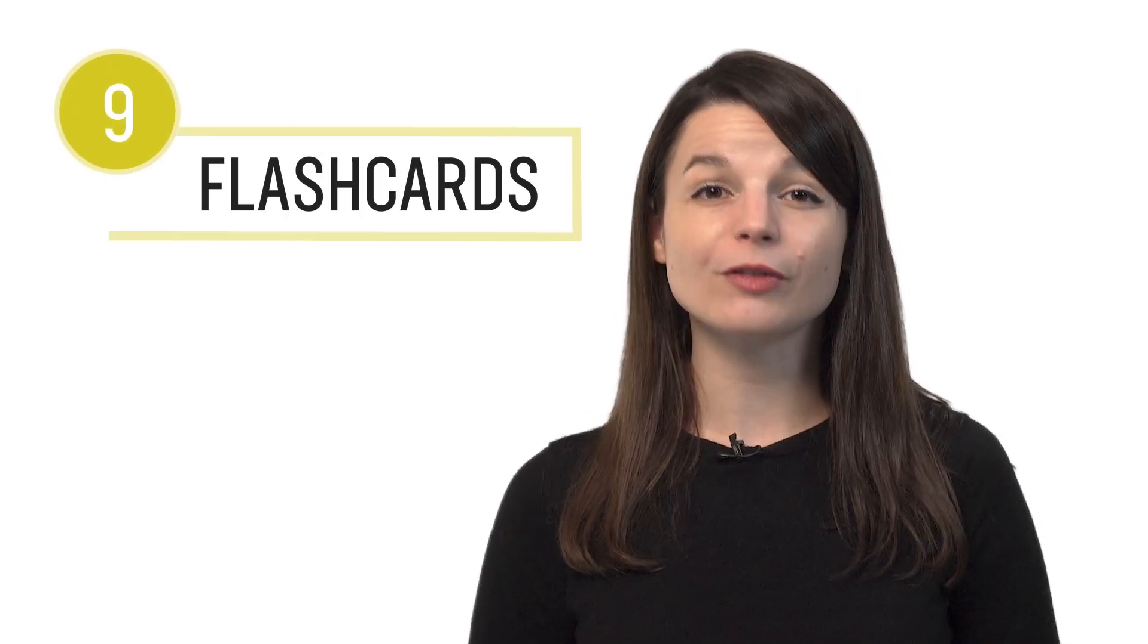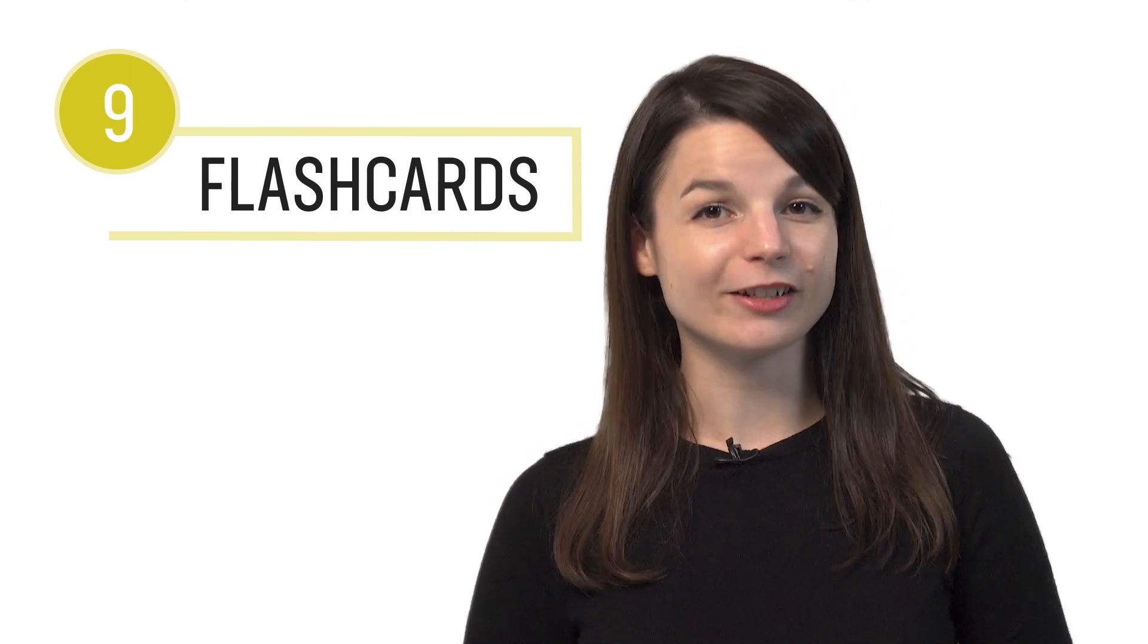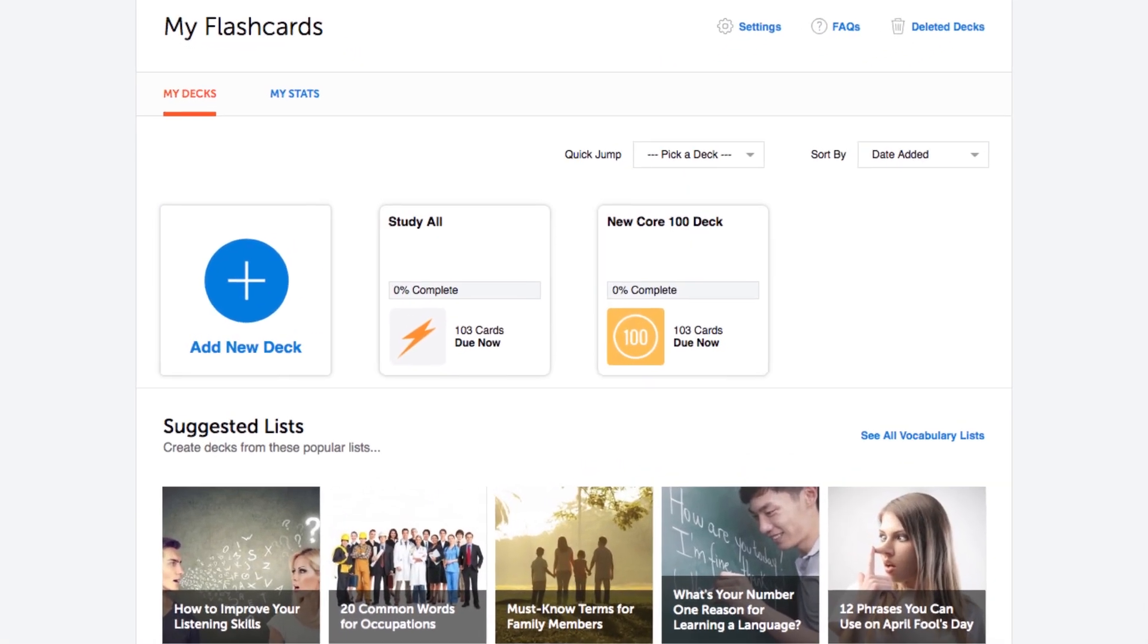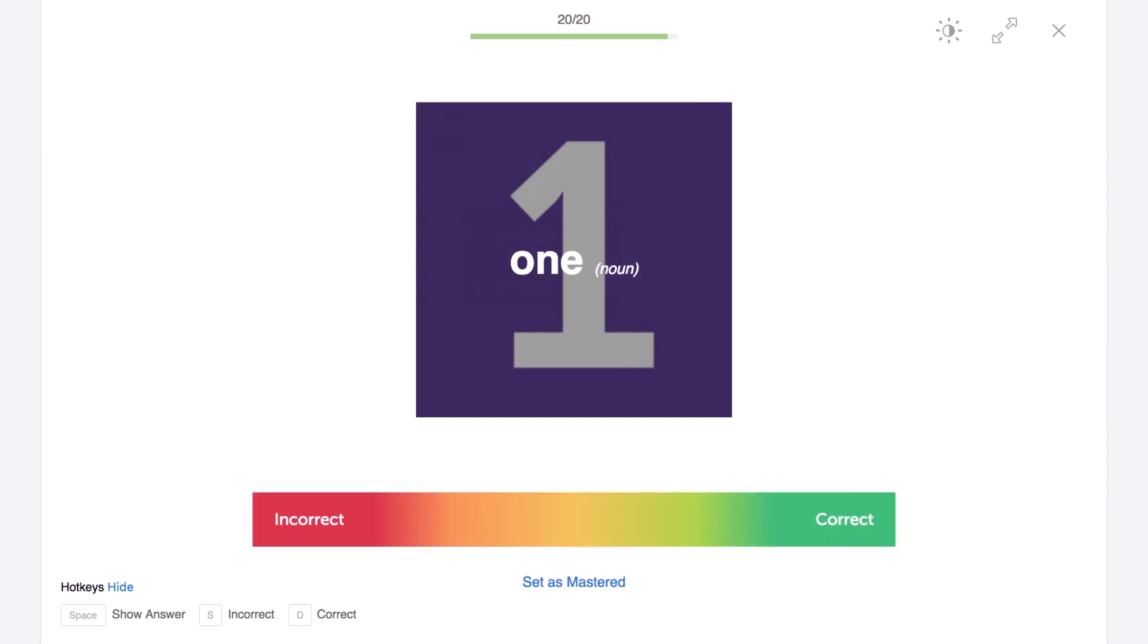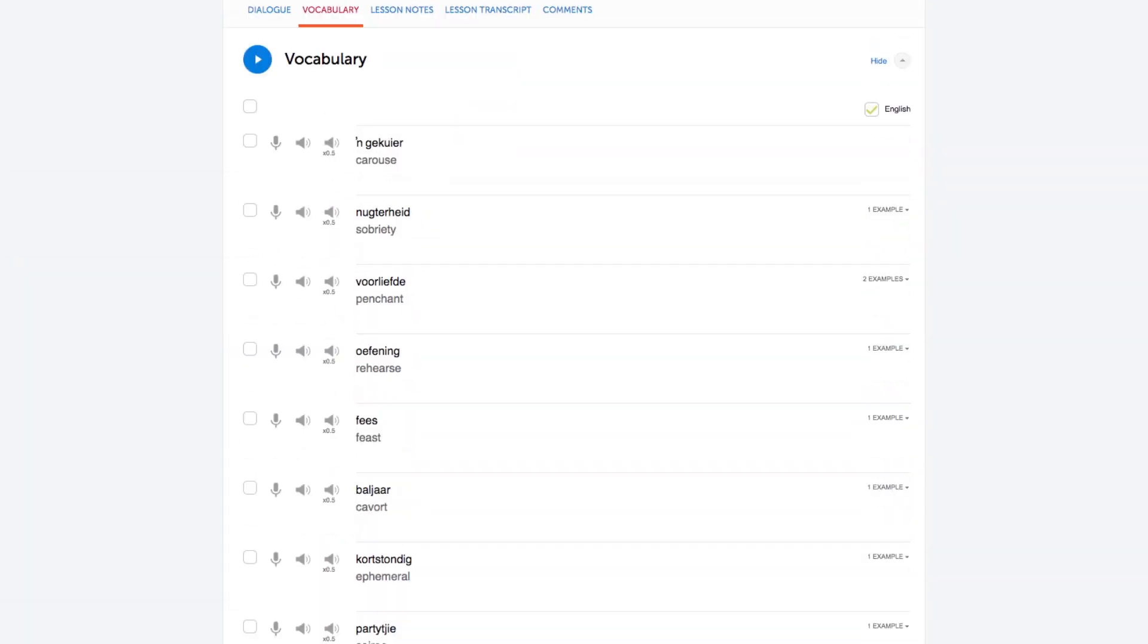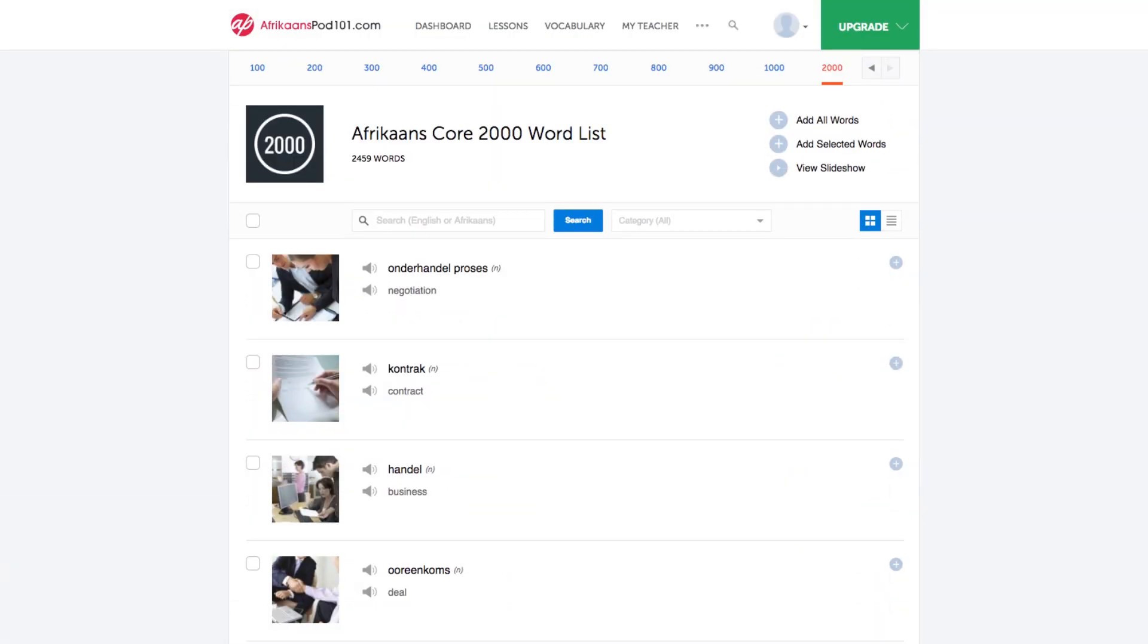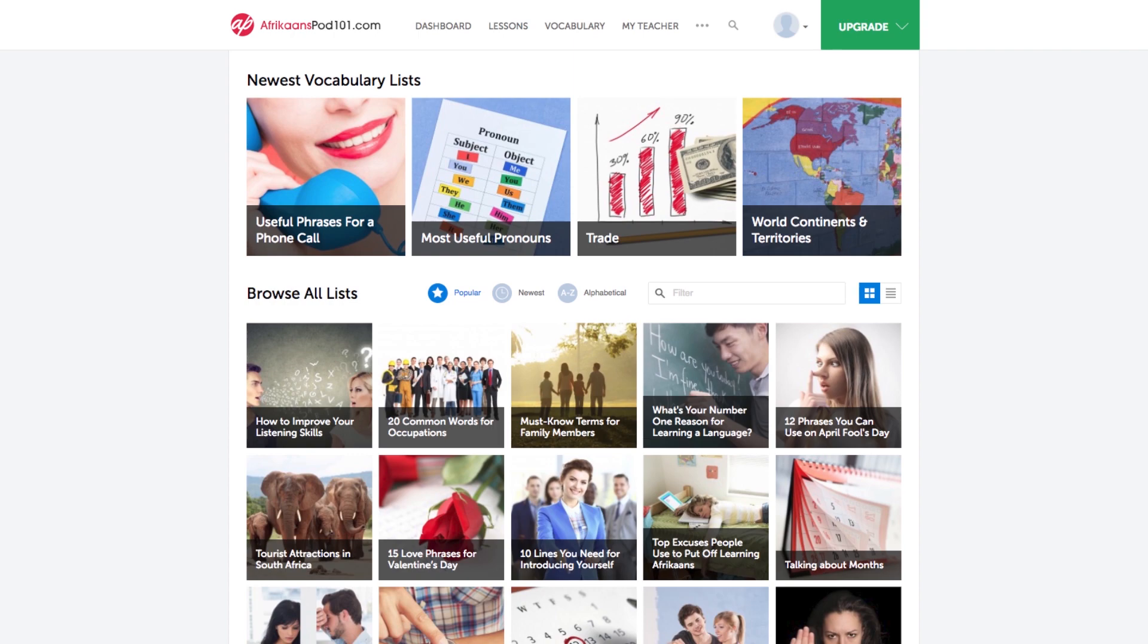Number nine, remember words forever with spaced repetition flashcards. Spaced repetition flashcards are a powerful language learning tool. They track your progress, they show you words based on how well you know them, and show them to you again at the right times, so you don't forget them. So if you get a word right, you'll see it again in seven days, then in 14, then every once in a while, just to refresh your memory. If you get it wrong, you'll see it again and again until you get it right. You can create flashcard decks from any lesson vocab section, word bank entry, the top 2000 core word list, and the free vocab and phrase lists.